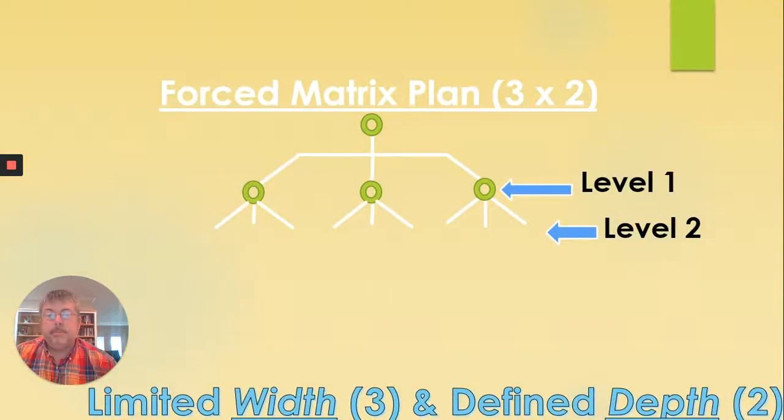So that's a breakaway plan and the force matrix plan. This is my least favorite. Usually they're more than three by two. But just to keep this simple, I've done a three by two matrix. That means that you can go three wide and two levels deep. So it has a limited width of three and a defined depth of two. So you're going to get paid those three down two levels.